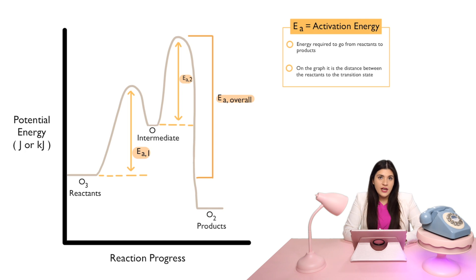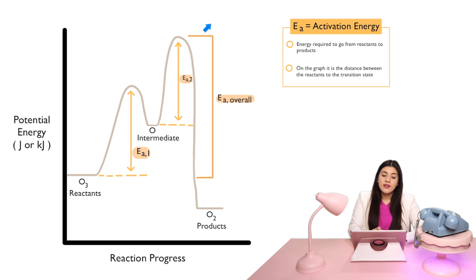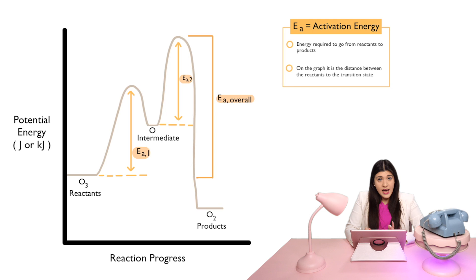If I wanted the activation energy of the overall reaction, then I would measure this from, I would start this off actually at the reactants. So, where the reactants are. And then it's the distance from the reactants to the highest transition state. Or you could also think of it as you're pretty much just adding these two activation energies together. That would be our overall activation energy.